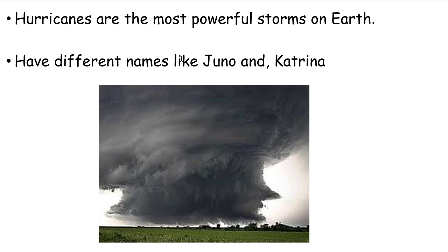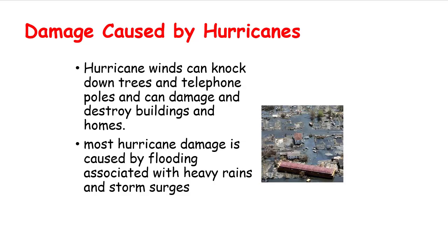Examples of huge hurricanes include Juna and Katrina. Hurricane damage is significant: winds can knock down trees, destroy telephone poles, and damage buildings and homes. Most hurricane damage is caused by flooding associated with heavy rains and storm surges.